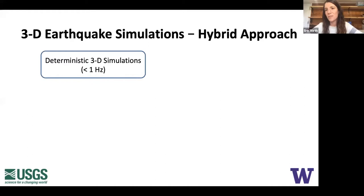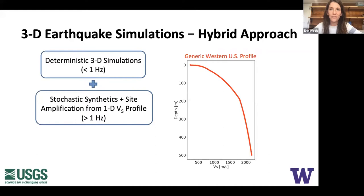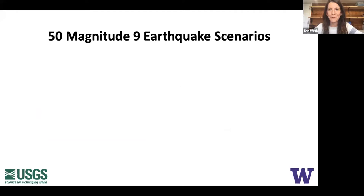In the simulations we used a hybrid approach to obtain broadband seismograms. We take the 3D simulations using finite difference up to a frequency of 1 Hz — limited by computer power and knowledge of the 3D velocity structure and earthquake source physics. For higher frequencies we use a stochastic approach, plus site amplification from a 1D Vs profile applied to all grid points at the surface. Combining the 3D low-frequency deterministic synthetics with stochastic higher-frequency synthetics, matched at 1 Hz, gives a broadband synthetic seismogram.